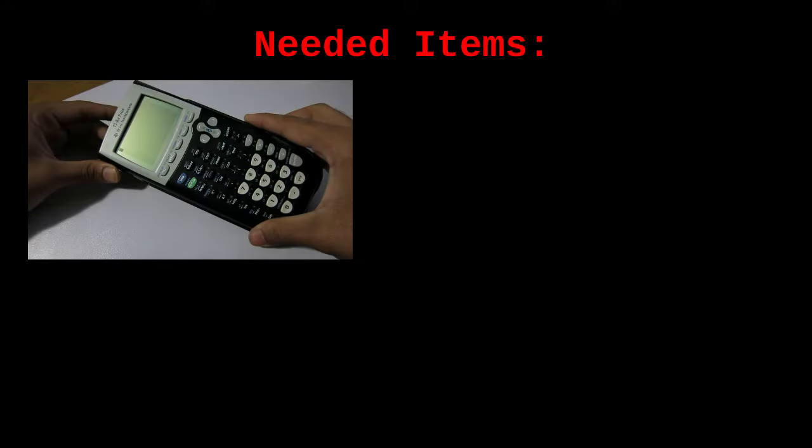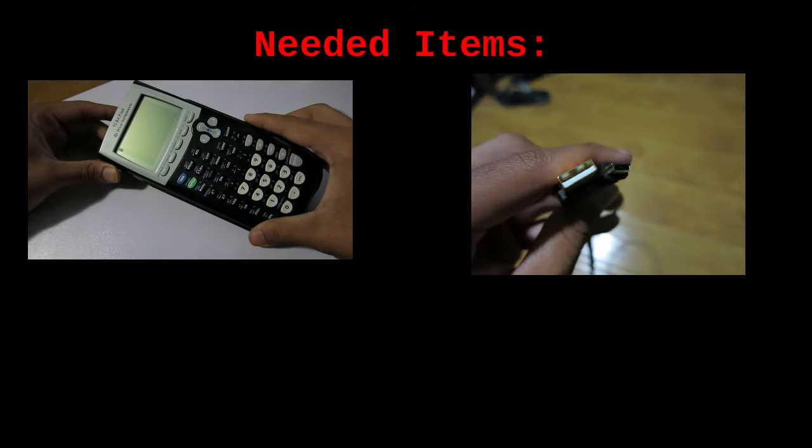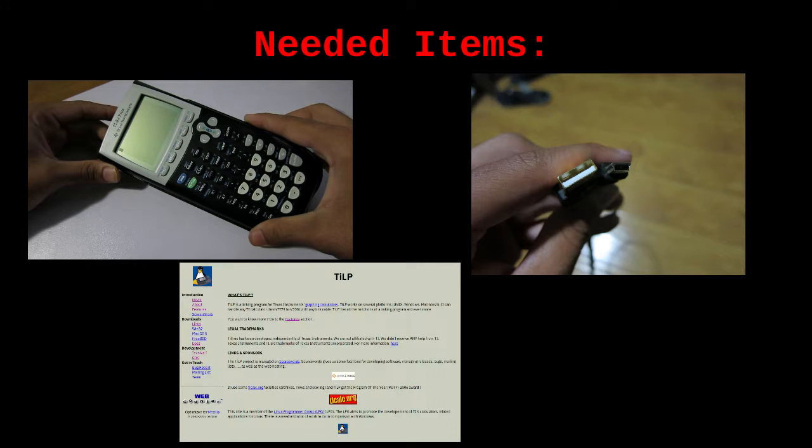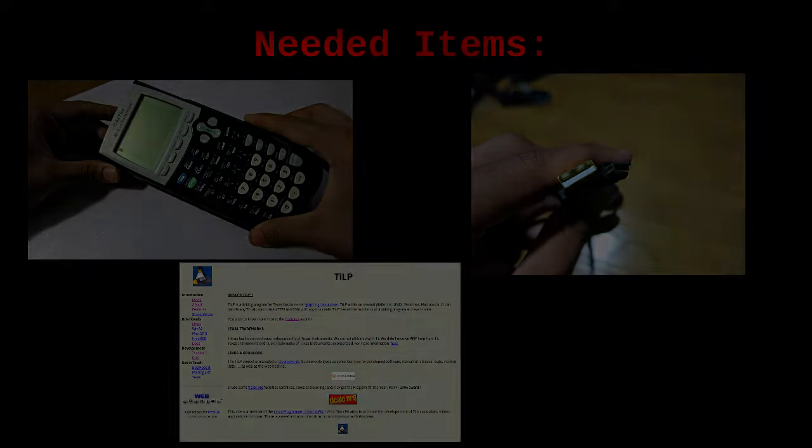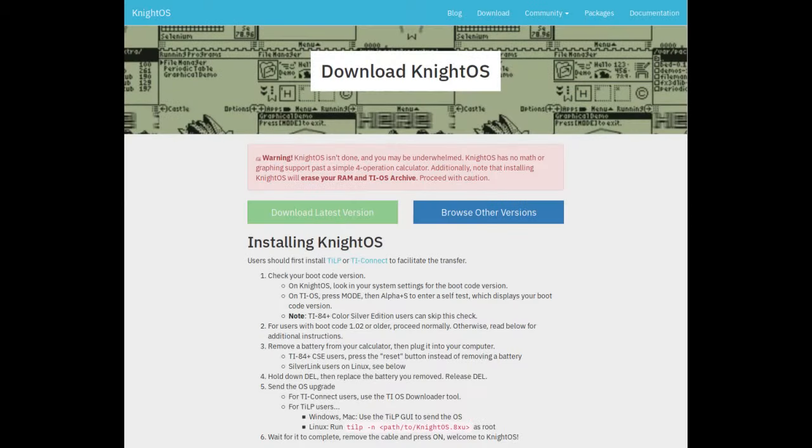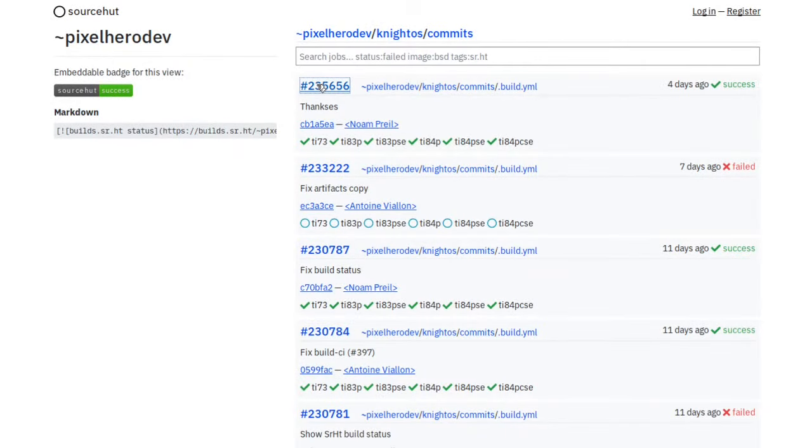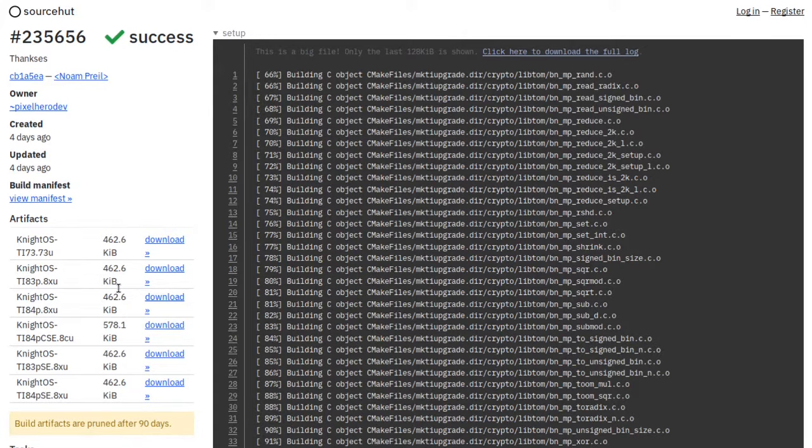One, a compatible calculator. Two, a USB-A to USB-B cable to connect your calculator to your computer. Three, the TILP software. And four, the appropriate NiteOS file for your calculator. We can download the NiteOS file from their website. The link for download the latest version appears to be broken, but the browse other versions link is working just fine. Once you're there, select the most recent commit that succeeded and you will find the files you need on the side.